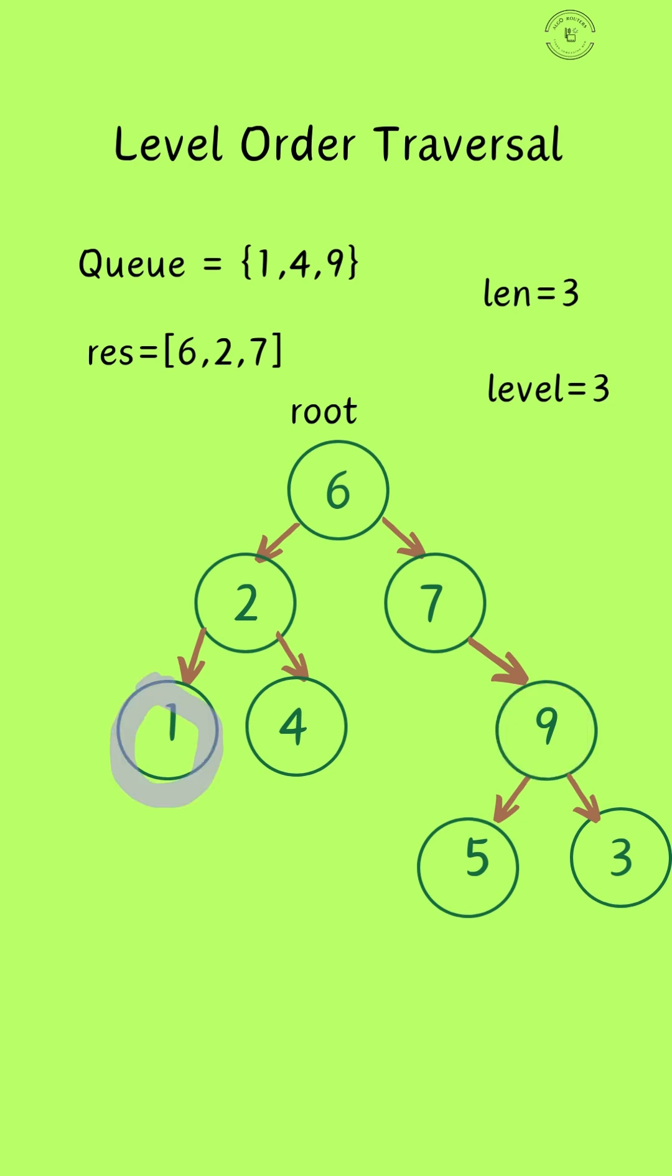Then we pop 1 and 4 from the queue and place them on the array. Notice that those nodes do not have child nodes. I think you understood the pattern here.